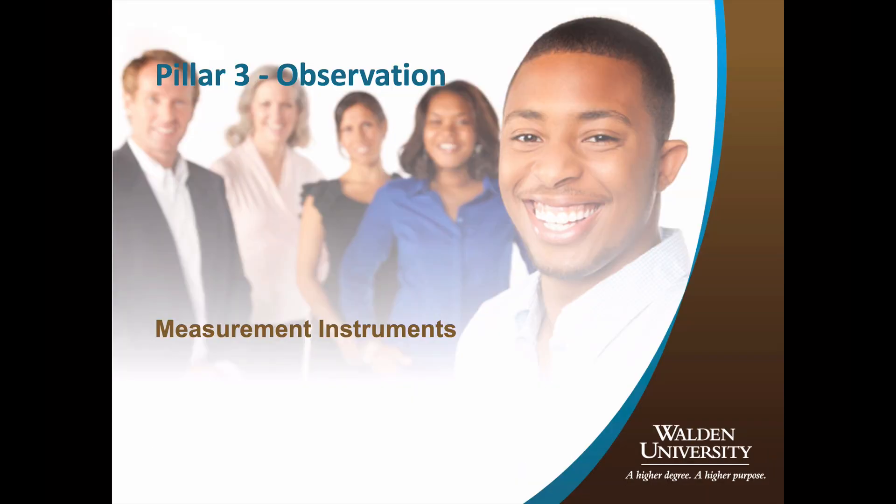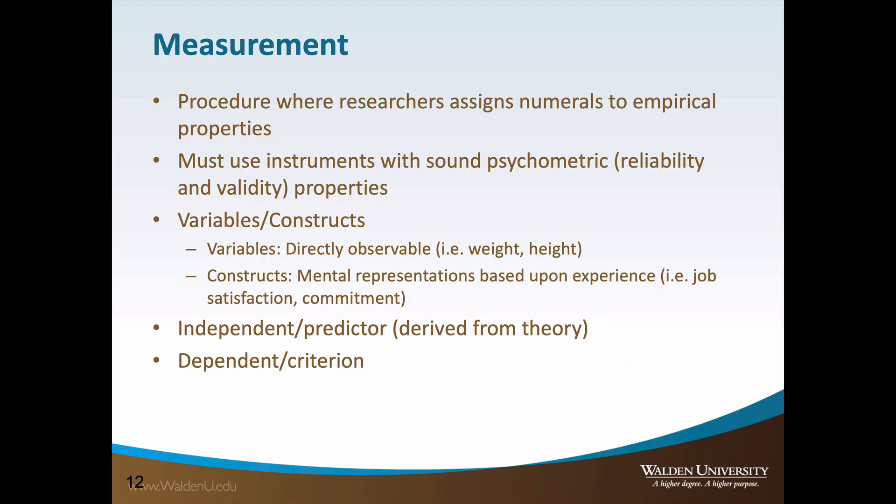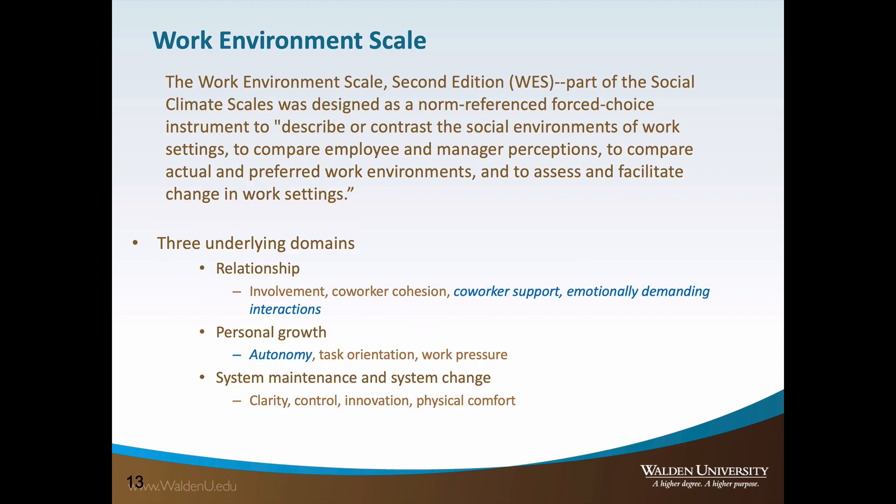The third pillar of quantitative research is observation. Observation involves measuring or assigning numerical properties to the variables or constructs of interest. The variables or constructs are either independent or dependent. Recall, the independent or predictive variables are derived from the theory, while the dependent variable is the problem of interest, which must be defined in the problem statement. The theory drives the measurement — this is a key principle.